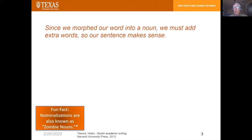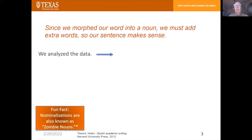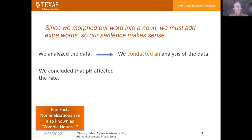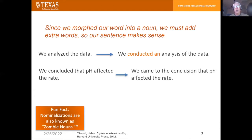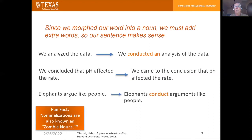Since we morphed this verb or adjective into a noun and we want to put it in a sentence, we have to surround it with other words to let it make sense within that sentence. So, 'we analyze the data' would be nominalized and turn into 'we conducted an analysis of the data.' 'We concluded that pH affected the rate' would become 'we came to the conclusion that pH affected the rate.' And 'elephants argue like people' would become 'elephants conduct arguments like people.'